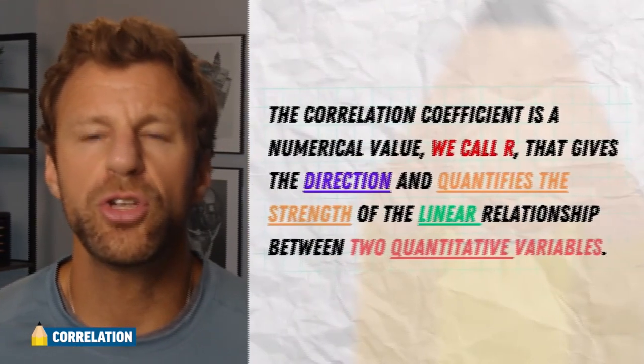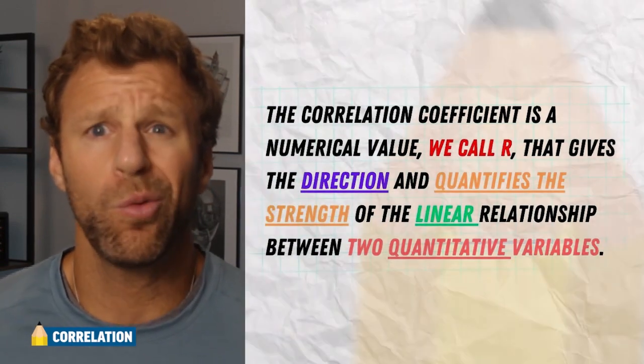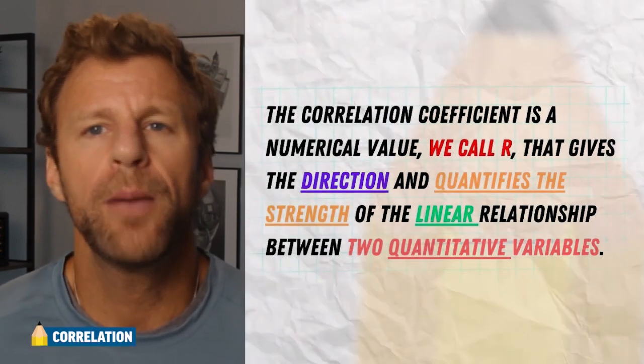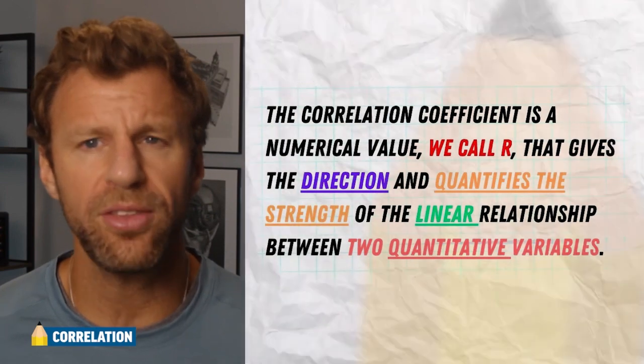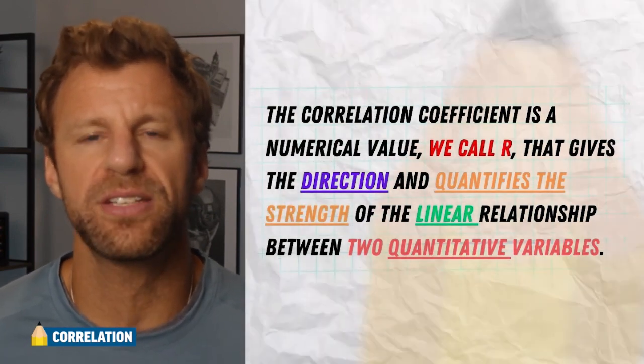This is a numerical value that actually tells you how strong a relationship is. But there's a couple really important rules. The correlation coefficient is a numerical value that we call r. Why r? Well, there's two r's in correlation is all I could come up with. But the idea is that it measures the direction, it quantifies the strength of a linear relationship between two quantitative variables.